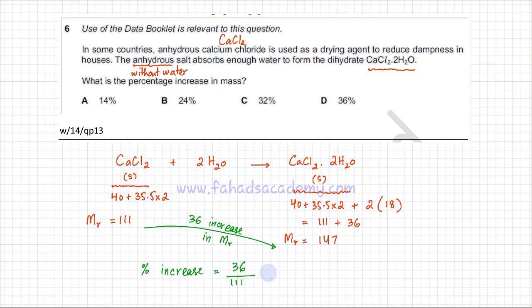And this comes out to be around 32%, approximately around 32%. So the answer to this question is going to be C, it's going to be 32%.